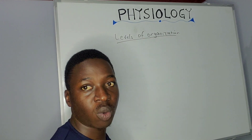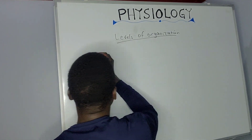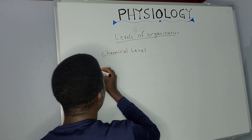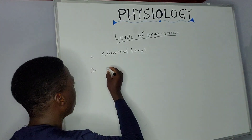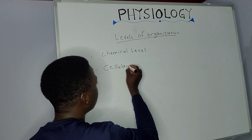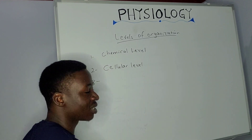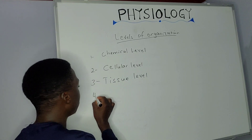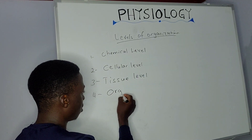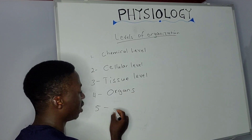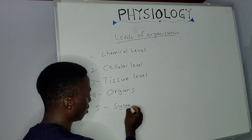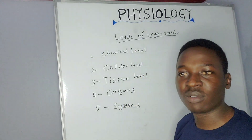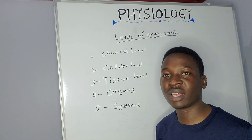Now let's look at the levels of organization of the human body. The first level is the chemical level. From the chemical level we move to the cellular level. From the cellular level we move to the tissue level. From the tissue level we move to organs, and eventually we form the body systems.